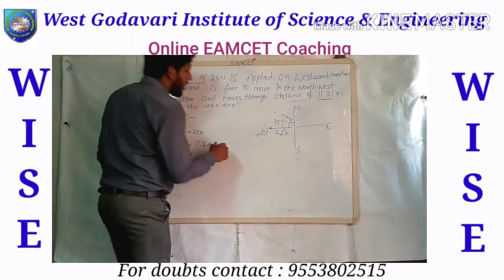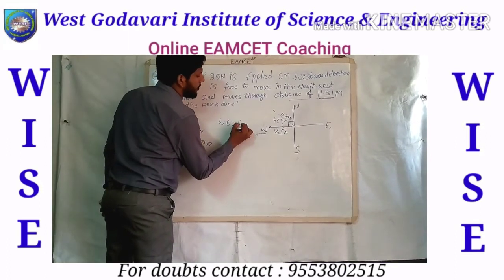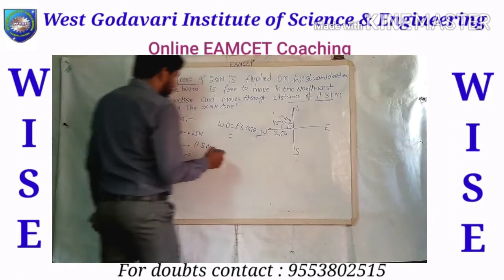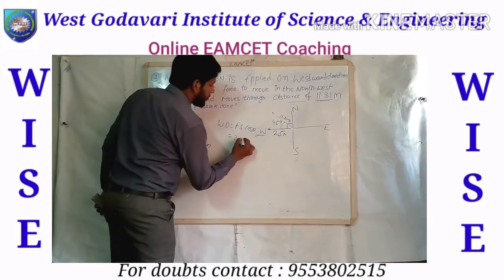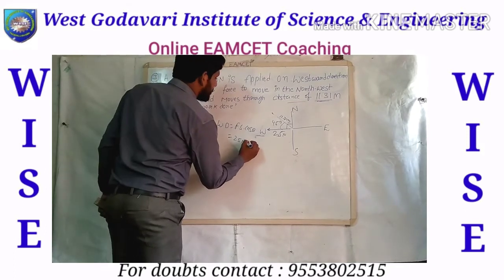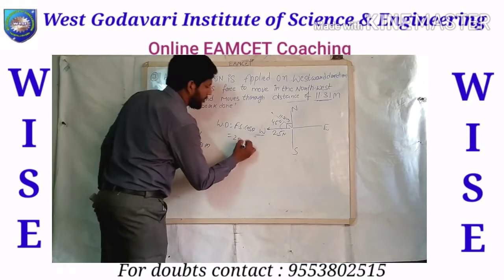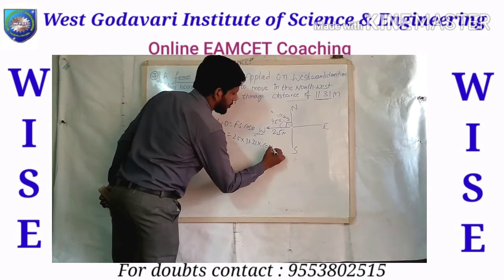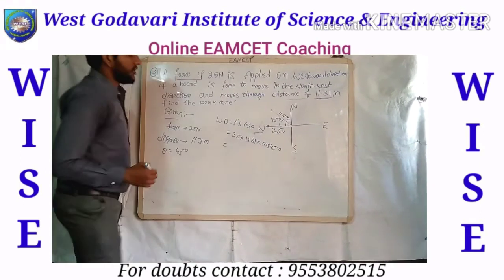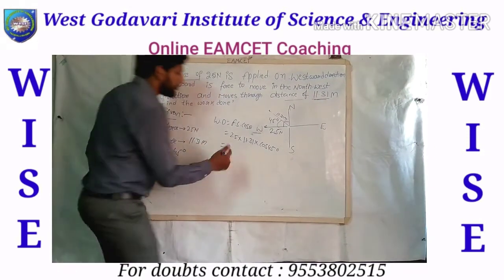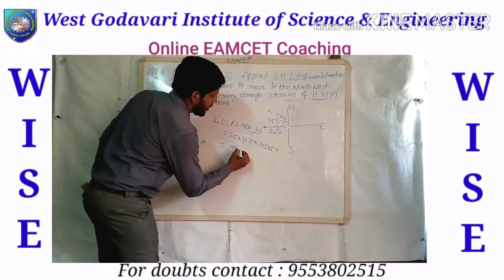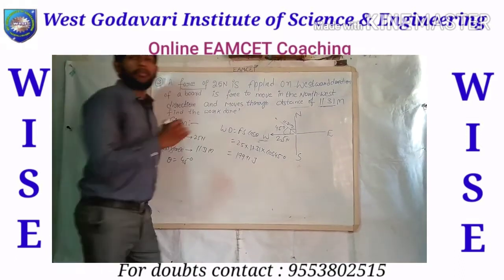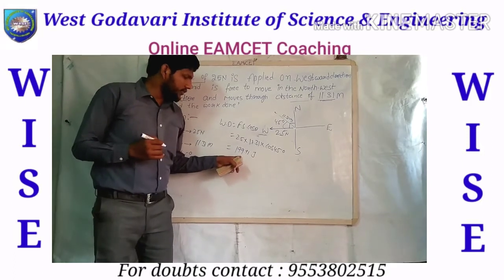Now we substitute the values into: work done = force into displacement into cos theta. Force is 25 newtons, displacement is 11.31 meters, and cos 45 degrees is applied. The calculation gives approximately 199.91 joules. The units of work done are joules, so work done equals approximately 199.91 joules, which rounds to approximately 200 joules.